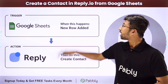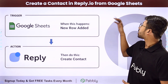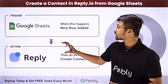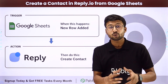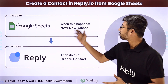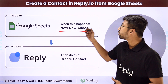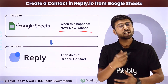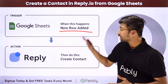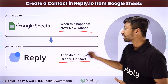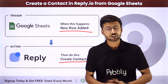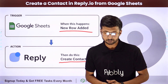In this video, we are going to learn how to create a contact in Reply.io from Google Sheet. If you are using Reply as an AI platform for email outreach, this automation is going to help you a lot. Whenever a new row of data with user details is added in Google Sheet, the same user will be created as a contact in Reply.io.